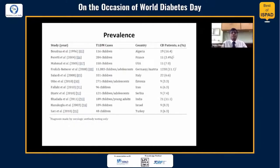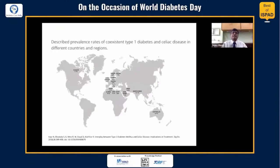This is some of the data published from India, including data by Dr. Bhadada's group, which suggests very high prevalence of celiac disease. We have published our own data where we have less than 2% celiac disease. If you look at the prevalence rate of co-existent type 1 diabetes and celiac disease in different countries and regions, you can see that there is gross variability across nations in the world.